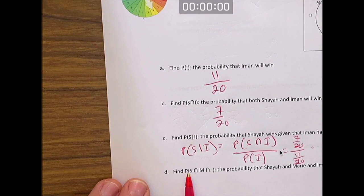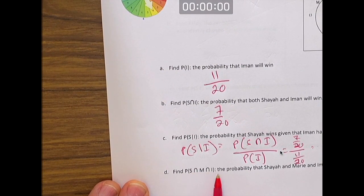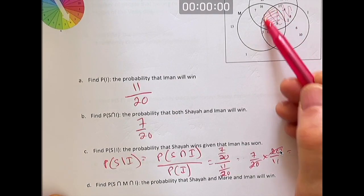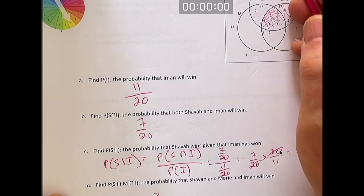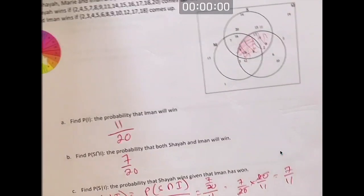What's the probability of S and M and I? That's the probability that Shea and Marie and Iman will all win. That's the section right here in the center. It's this section right here. And there are 3 numbers there out of the total 20. 3 out of 20. That's it for question number 4.